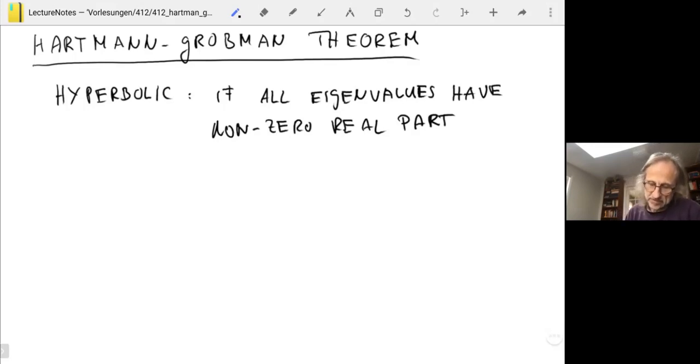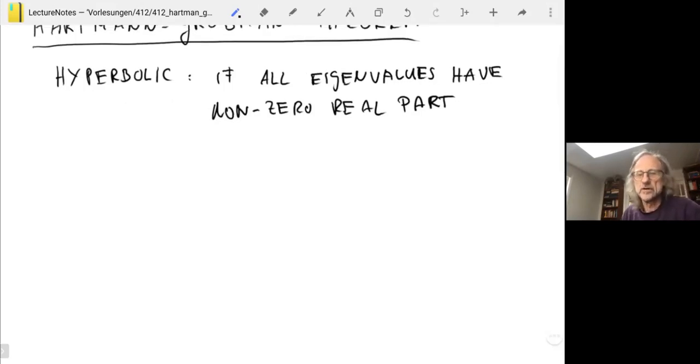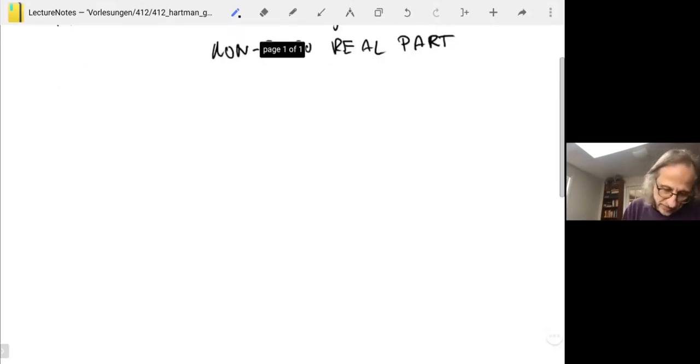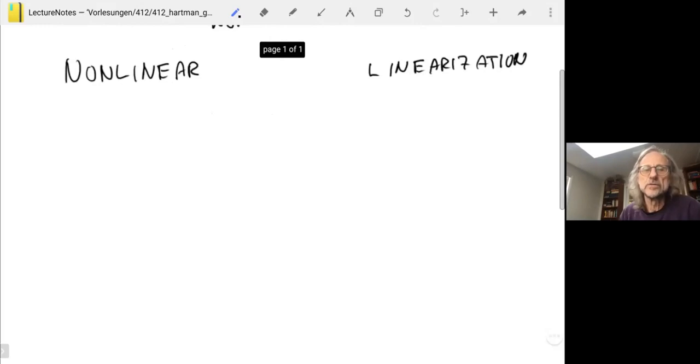Okay, so then the statement of the Hartmann-Grobman theorem is best just shown in terms of a picture. One can write it down formally what it all means, but the picture is the main thing. So let's say we plot on the left side the nonlinear system, and on the right side we plot the linearization of it. When I say we plot, I mean we look at the phase plane. I mean this is not only true in 2D, I'm going to draw it in 2D, but this is a statement in general dimensions. Okay, so we have a fixed point.